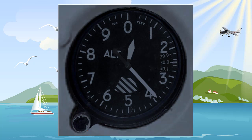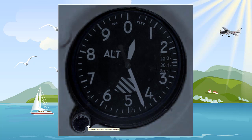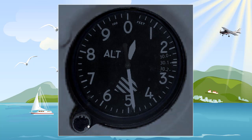So if the pressure changes from 30 to 30.10, you can calibrate the altimeter by setting the Kollsman window to 30.10. Changing the setting causes the hands on the altimeter to rotate to reflect the new setting, which keeps the altimeter setting accurate.